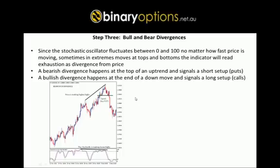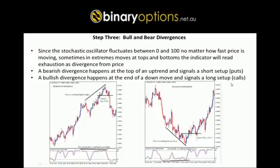In a bearish divergence, price is making higher highs and the stochastic is making lower highs. When price reverses and takes out the previous low, we have a signal to buy puts. For bullish divergences, price is making lower lows and the stochastic is making higher lows, and when we take out the previous high we have a signal to buy calls. Bearish divergence: price making higher highs, stochastic making lower highs. Bullish divergence: price making lower lows, stochastic making higher lows.